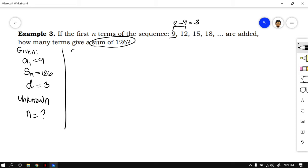Now let's solve. We will be using the formula S sub n is equal to n over 2, quantity 2, a sub 1, plus n minus 1 times the common difference. Now let's substitute. The sum of the terms is 126, and you are looking for the value of n. How many terms are there?